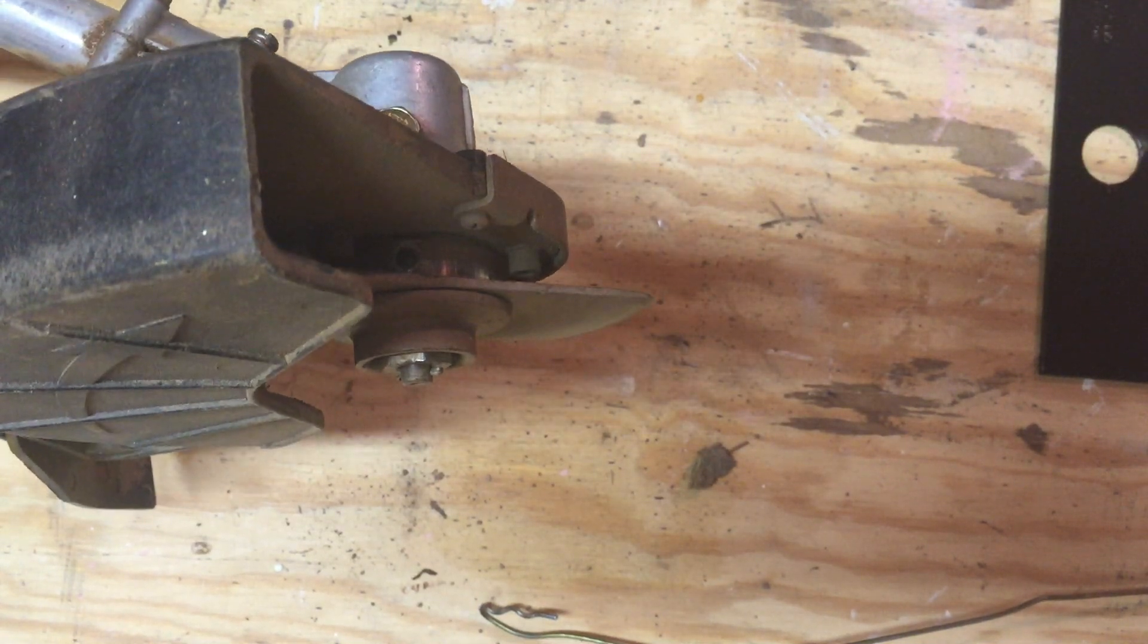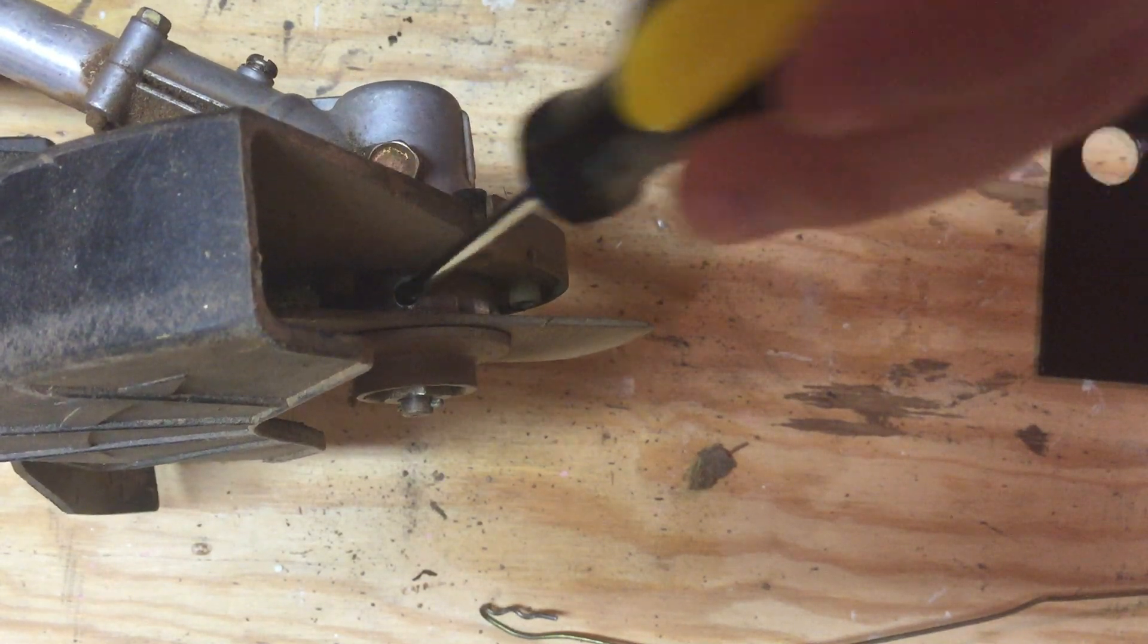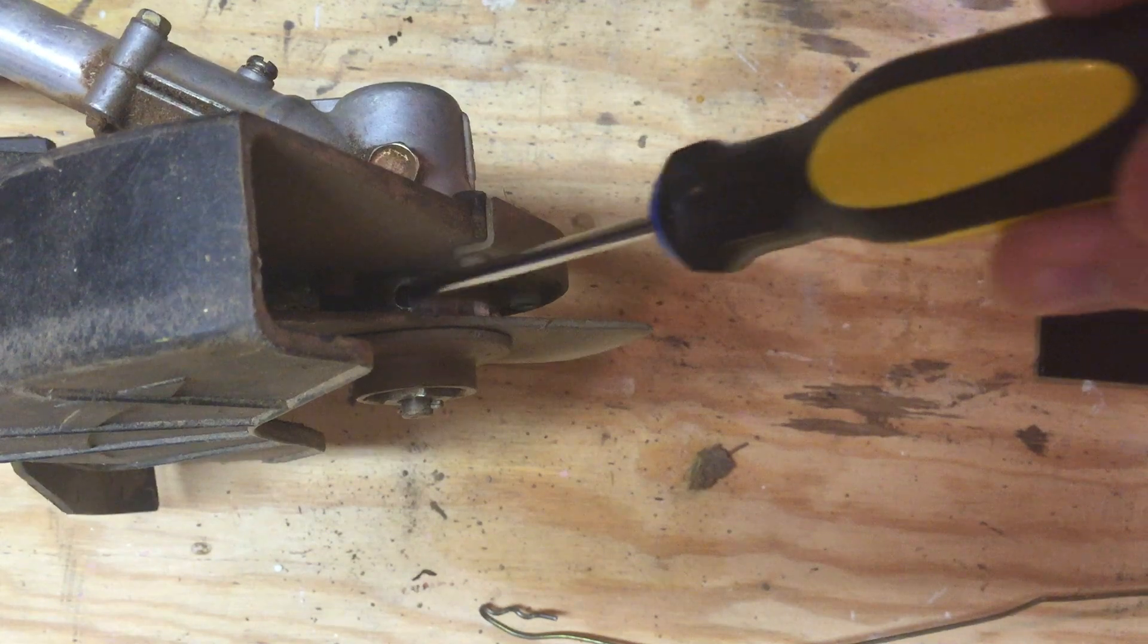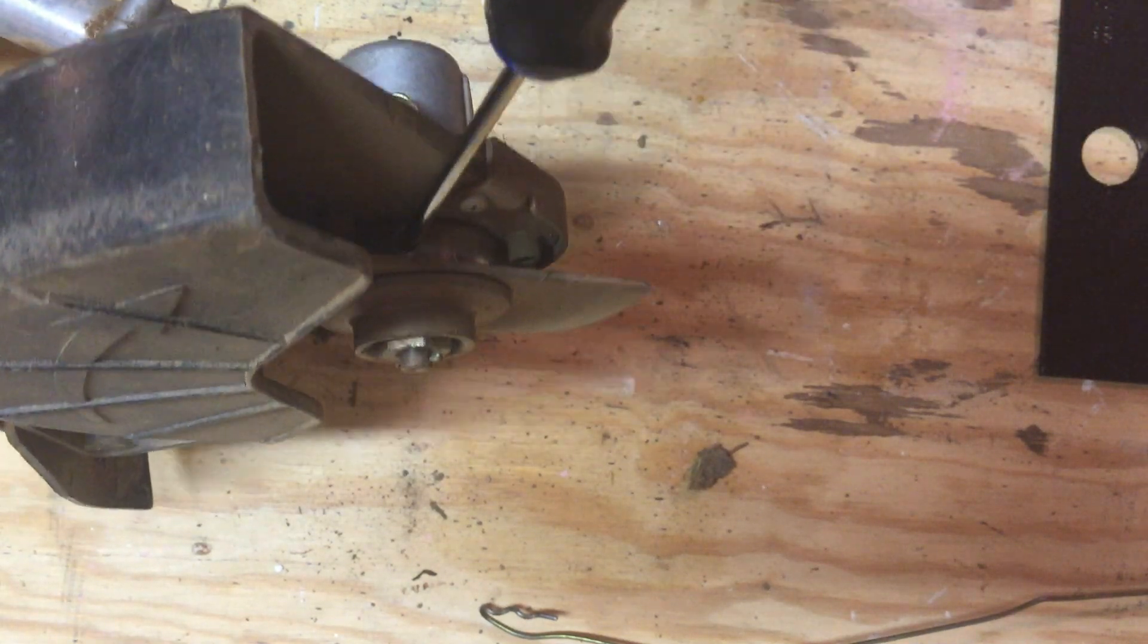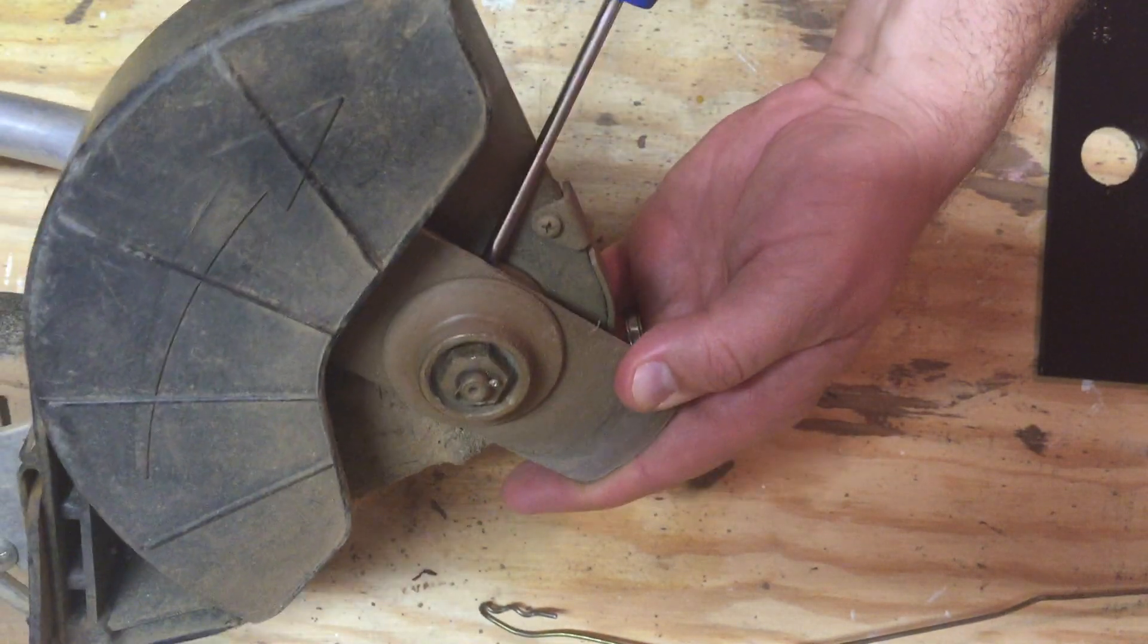Once you find that hole, your edger did come with a tool originally, but if you have a used one, any kind of screwdriver will work. I'm just using a Phillips head screwdriver and I stick it in that hole. And what it does is it locks the blade so the blade won't spin, which is very helpful in the next step.